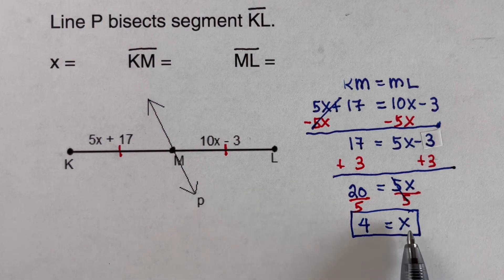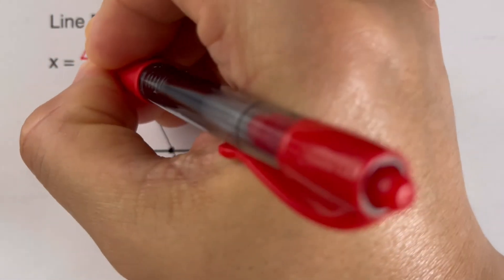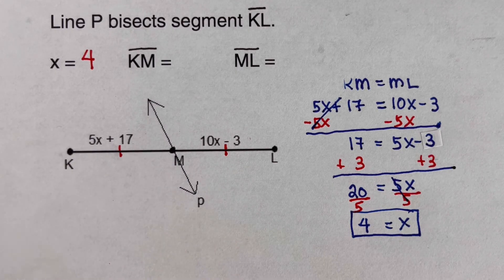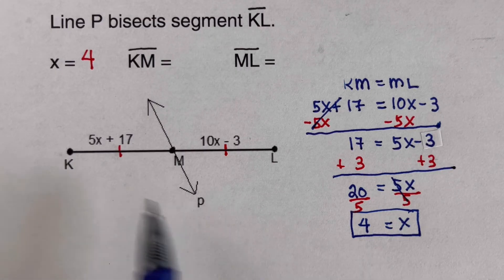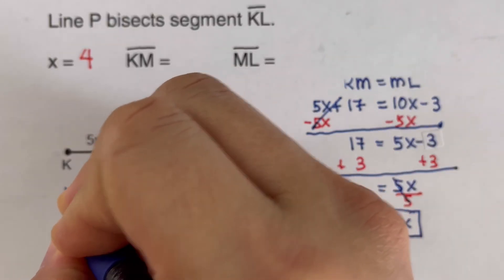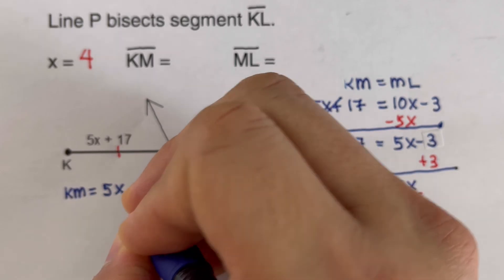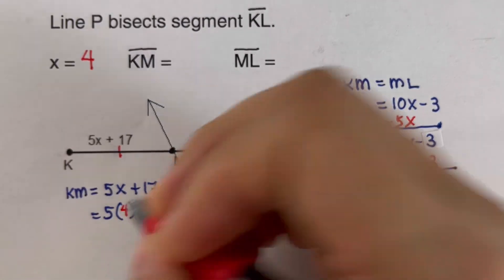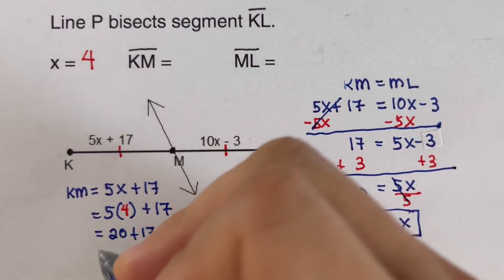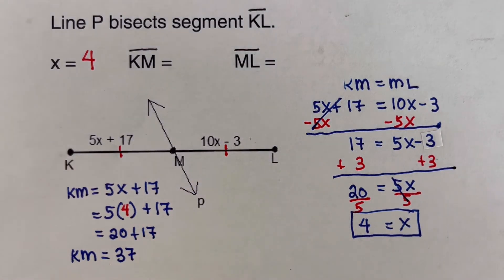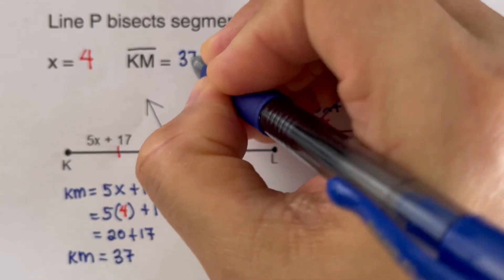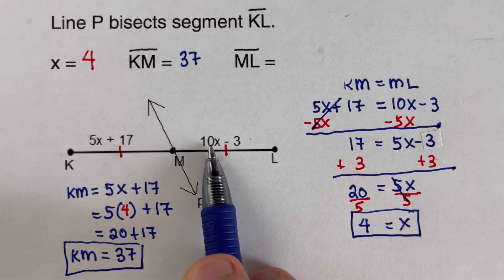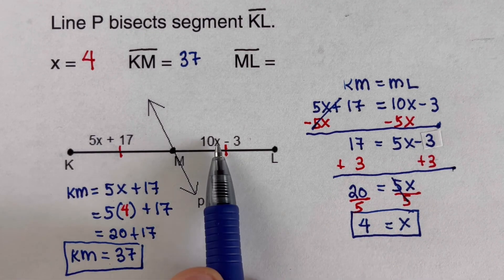After solving, x equals 4. To find KM, we substitute x into 5x + 17: that's 5 times 4 plus 17, which equals 20 plus 17, so KM equals 37. For ML, we substitute x into 10x − 3, plugging in 4 as well, to solve for ML.